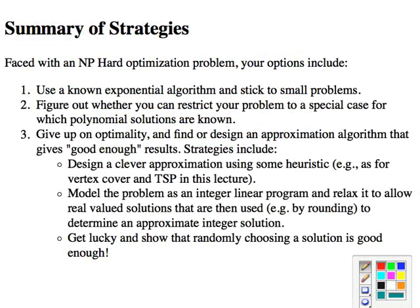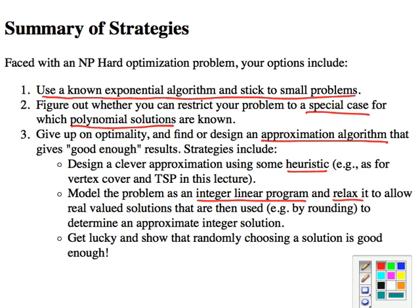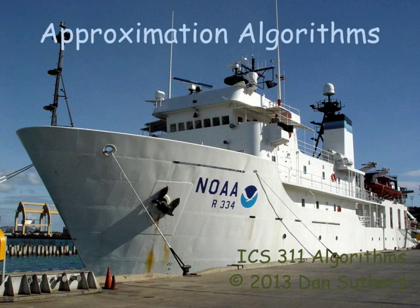Let's conclude with a summary of strategies for what to do when you're faced with an NP-hard optimization problem. You can basically just suck it up, use an exponential algorithm, and stick to small problems. You can look for special cases for which polynomial solutions are known, and there are many of those. You can give up on optimality and try approximations, and we found different strategies for doing that. There's some heuristics, like the minimum spanning tree heuristic for the traveling salesperson problem. There's the integer linear programming problem being relaxed to real valued solutions. And then there's, in a few cases, randomly choosing is actually within twice as bad as the optimum solution, or within a reasonable amount. But don't expect that to happen too often.